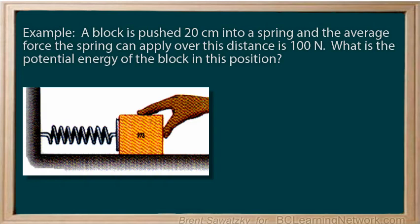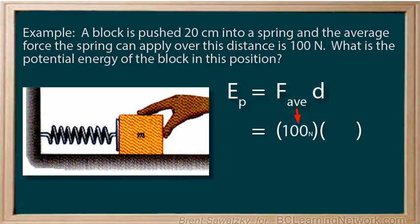Well, first, let's write down our equation being used. Ep equals Fav d. And next, replace the Fav and d with brackets. The average force is 100 newtons, and the distance is 20 centimeters.